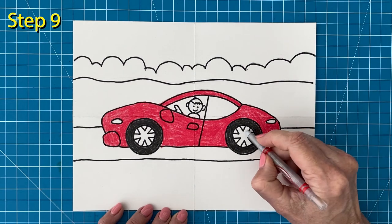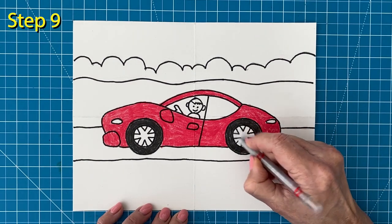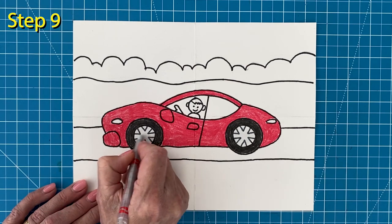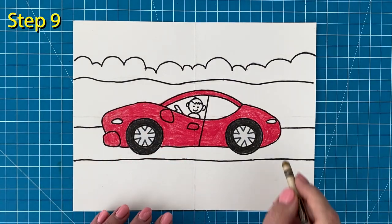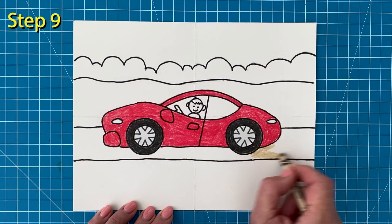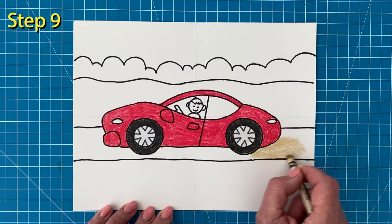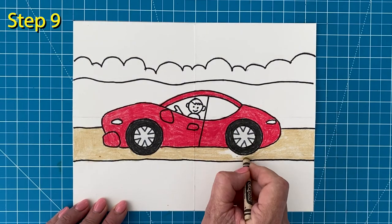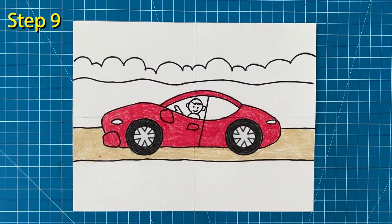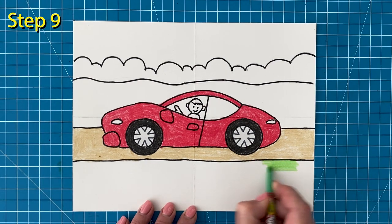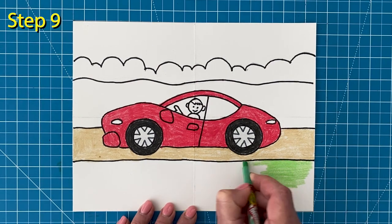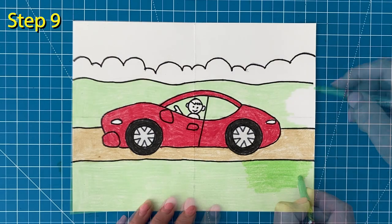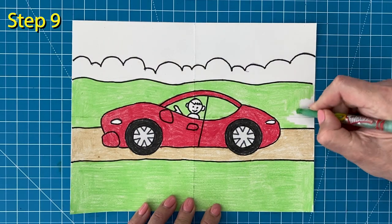I'm going to color my hubcaps a light gray. This color is pretty light, so I'm going to go over it a couple of times to make it show up. And I'd like my road to have a little more color than just gray. So I've found a golden brown to use. The grass will be very colorful if I use my yellow green crayon. That goes for the grass above the car, too.